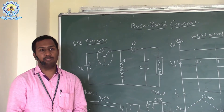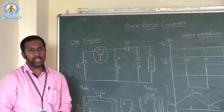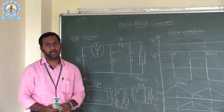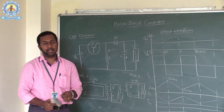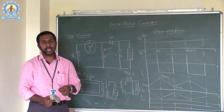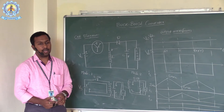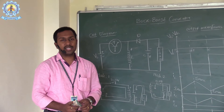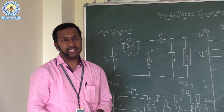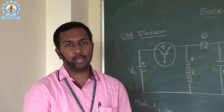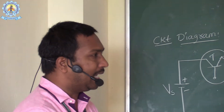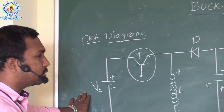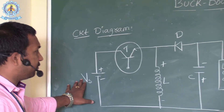The main advantage of the buck boost converter is: here we are giving a fixed DC input voltage, and we are getting either a voltage that is more than the input voltage or less than the input voltage. That's why the buck boost converter can act as a step up or step down converter.